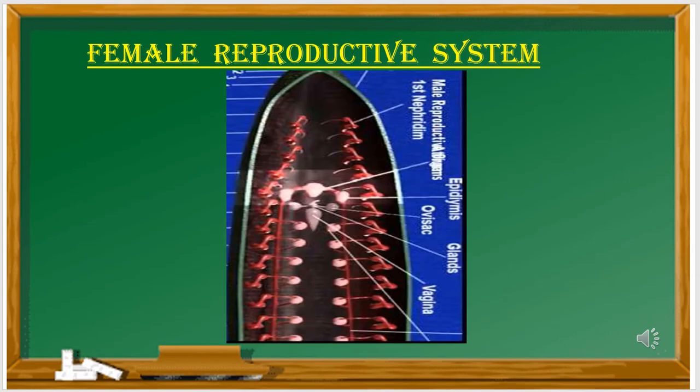The female reproductive organs are the ovaries, oviducts, and vagina. The female reproductive system is found in the 11th segment on the ventral side. The male reproductive system is found in the 12th segment, whereas the female system is found in the 11th segment on the ventral side. Each ovary is a coiled ribbon-shaped structure.